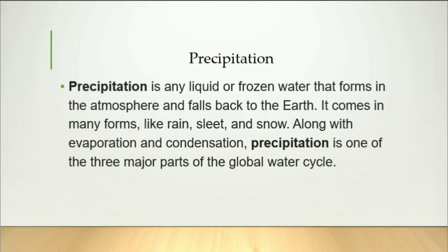Precipitation is any liquid or frozen water that comes from the atmosphere and falls back to the earth. It comes in many forms like rain, sleet, and snow. Along with evaporation and condensation, precipitation is one of the three major parts of the global water cycle.